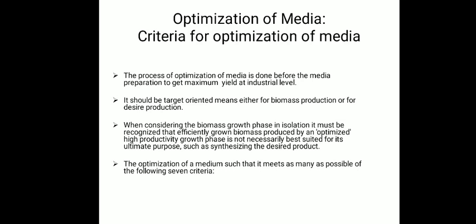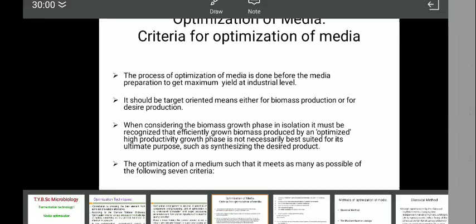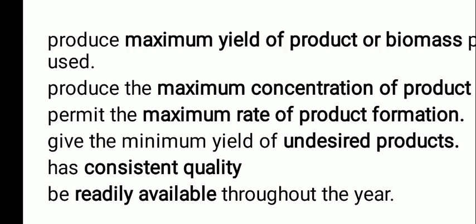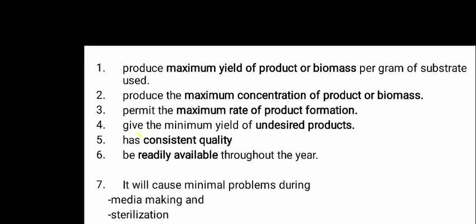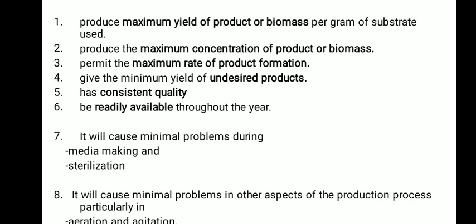Media optimization generally works on seven basic criteria, and all these criteria are completely dependent on the purpose of synthesizing the desired product. The first important criterion is to produce the maximum yield of the product or biomass per gram of substrate used. By using each gram of substrate, we aim to get the maximum product or biomass produced by the microorganisms.